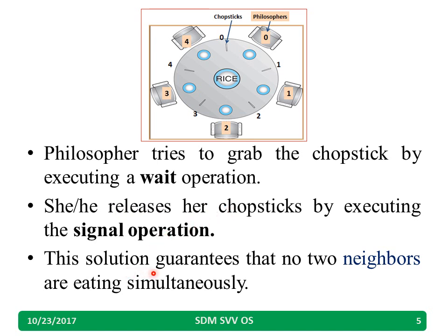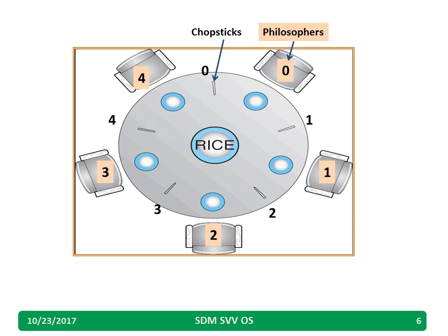This solution guarantees that no two neighboring philosophers are eating simultaneously. If philosopher 0 is eating, then philosopher 1 and philosopher 4 are not eating. Here is a diagram — a close view — showing chopstick 0, philosopher 0, chopstick 1, and so on for the remaining philosophers.